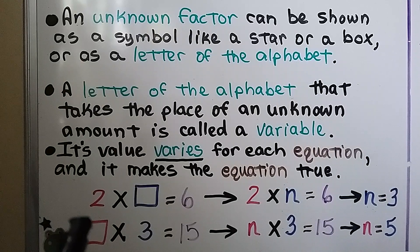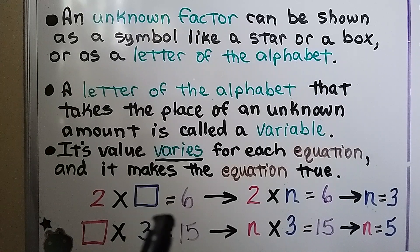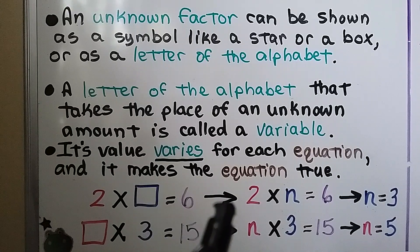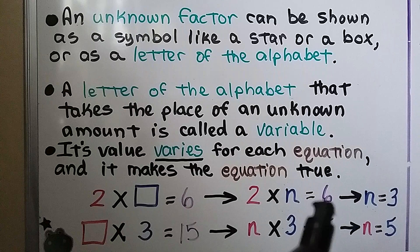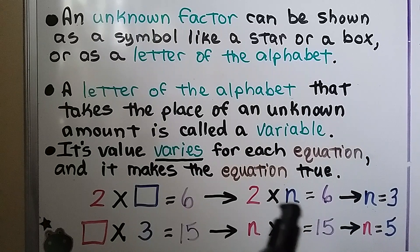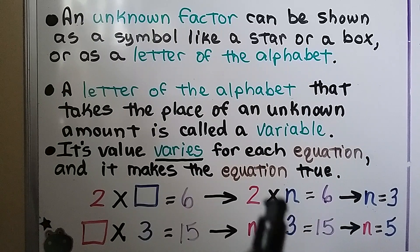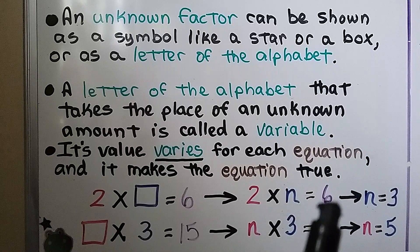Here we have 2 times a box is equal to 6. We can also say 2 times n is equal to 6, putting n in the place of the empty box. We know that 2 times 3 is 6, so n is equal to 3.